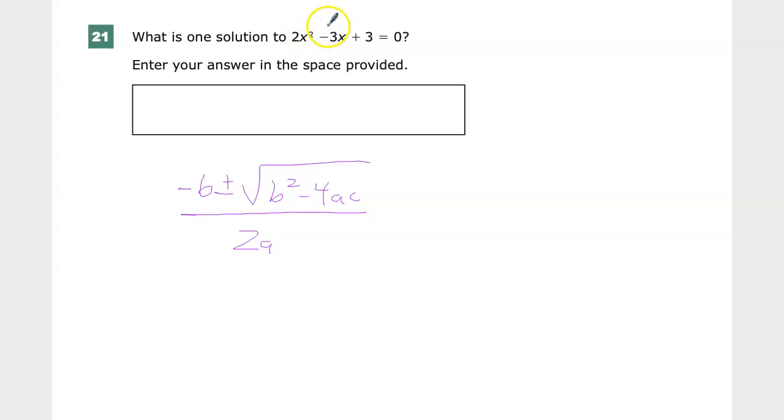The value, the coefficient on x squared is 2, so a's value is 2. The coefficient on x, the linear coefficient, is b is negative 3. Make sure you keep that negative. And your c value is your constant term, which is 3.